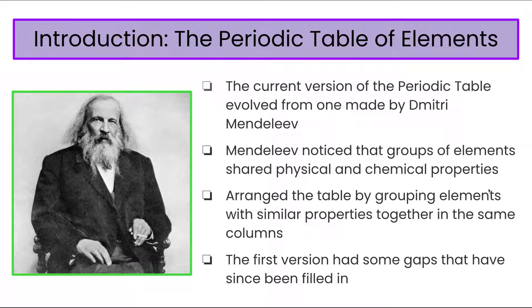Let's start with introducing the current version of the periodic table. The periodic table evolved from the one that was made by Dmitry Mendeleev. What Mendeleev did is he started with a bunch of data and noticed that groups of elements shared common physical and chemical properties. We're going to get into this in a later lesson, but just know that that's where he started.